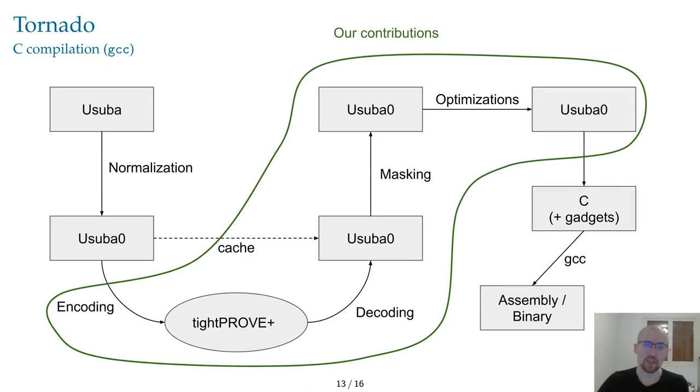And we now arrive to Tornado. Tornado is a tool we developed to automatically generate bit-sliced and N-sliced masked implementations from high-level specifications. It is built from the Usuba programming language, which already does automatic bit-slicing and N-slicing. We modified the Usuba compiler to automatically mask ciphers as well, and to use TightProof+ to make sure that the generated implementations are T-probing secure.